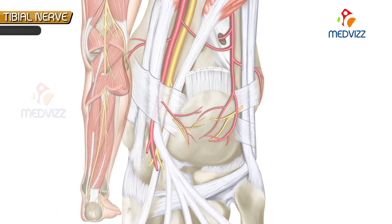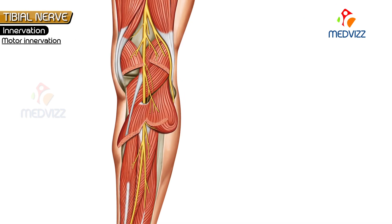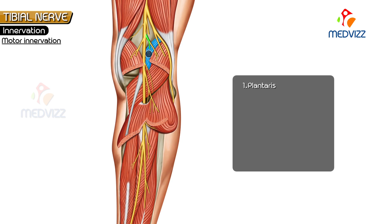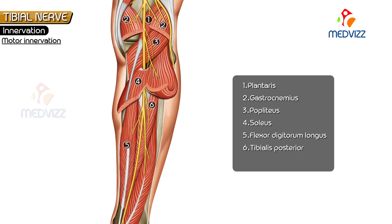Regarding innervation, the tibial nerve has both motor and sensory components. For motor innervation, in the popliteal fossa it innervates plantaris, gastrocnemius, and popliteus. In the leg, it gives innervation to the soleus (deep part), flexor digitorum longus, tibialis posterior, and flexor hallucis longus.